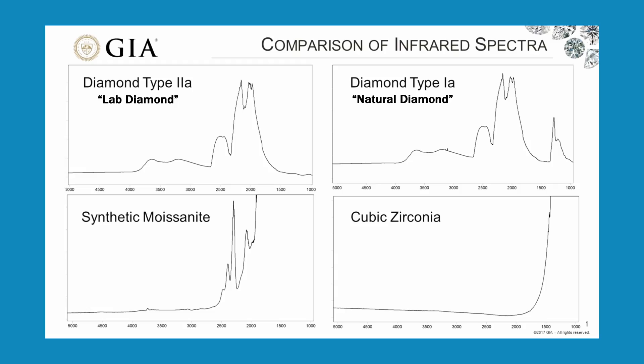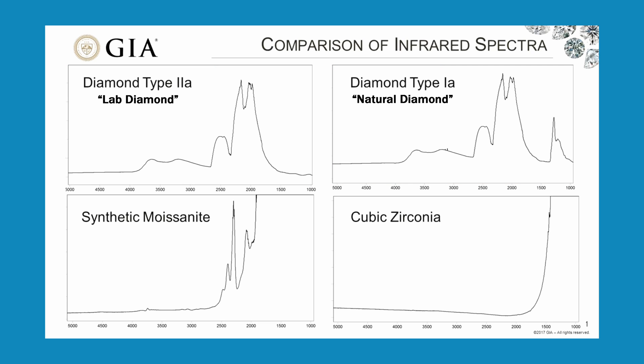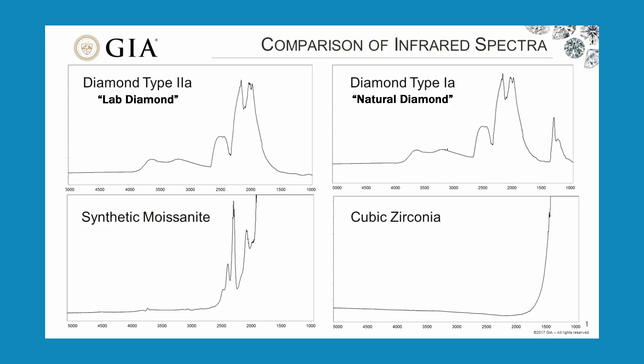Infrared spectroscopy can also be used to determine the difference between a synthetic versus an earth created diamond. This is done more professionally with expensive equipment, but you would get one of these readouts from this test. You can see this extra peak that shows up on most natural diamonds due to the presence of nitrogen when forming, so you can tell the difference.